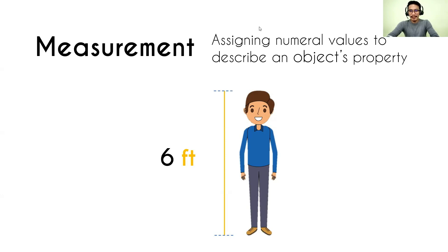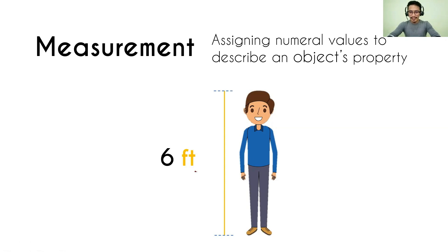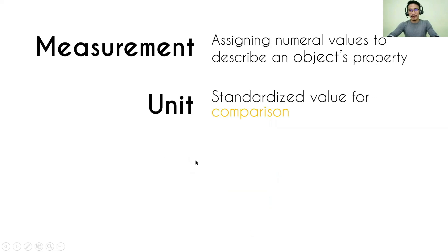So in measurement, we have two important things to consider: first, the number, and second, the point of comparison. That point of comparison is referred to as a unit. Basically, units are just a point of comparison or reference. A unit is not absolute — it is only standardized, an agreement. We can agree on what our standard is.